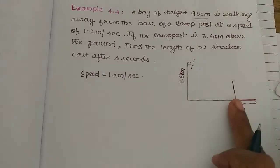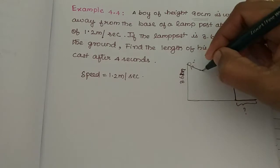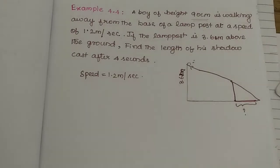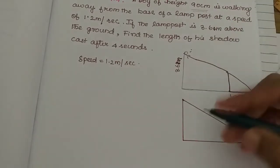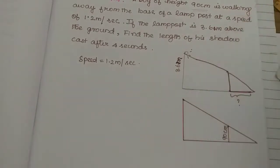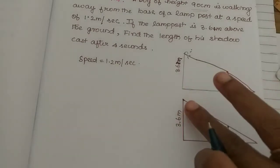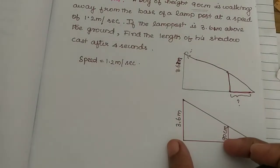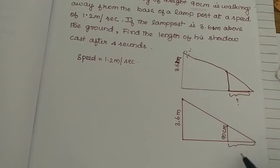To solve this, we will make a triangular form. Make the scale proper. The height of the boy is 90cm, and the height of the lamp post is 3.6 meters. We need to make sure units are consistent — centimeters or meters.